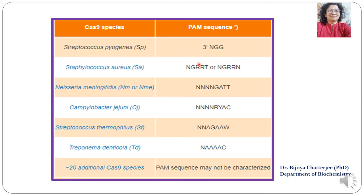If these PAM sequences are present in a virus, these Cas9 species will be able to deactivate it. If these sequences are not present, then these Cas9 species will not be able to deactivate the virus.